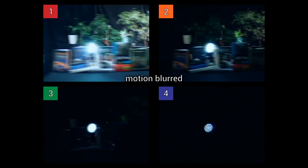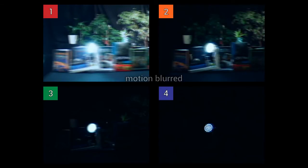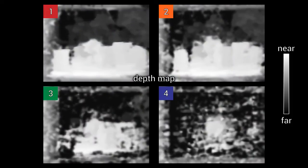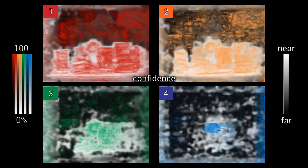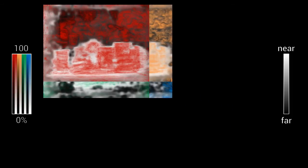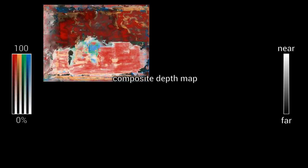For each of the four different exposures that are recorded at varying perspectives, we compute a depth map. Since these depth maps vary locally in quality due to motion blur for the higher exposures and due to low signal-to-noise ratio for the lower exposures, we compile them to a single composite depth map based on depth confidence criteria.